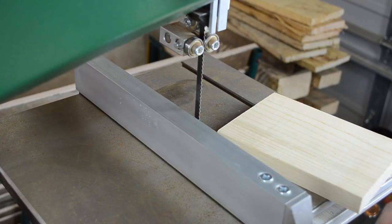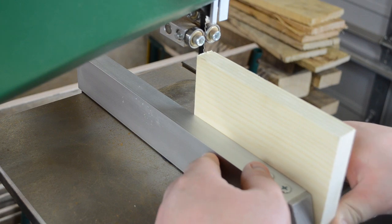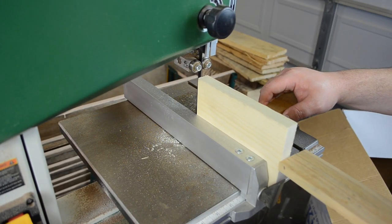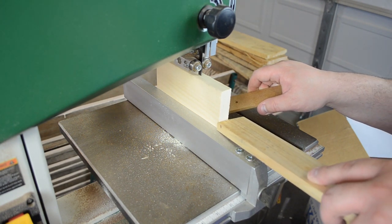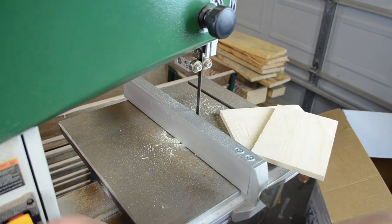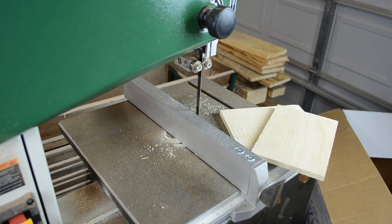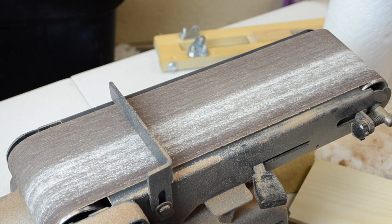At the bandsaw I set up my fence to do a resaw cut half the thickness of the material. These pieces were a little bit too small to run through my surface planer so I just headed over to the belt sander to get rid of some of the saw marks.